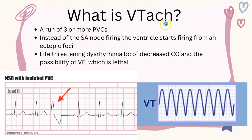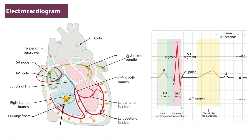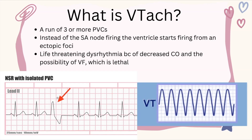So what is VTAC? If three or more PVCs — premature ventricular contractions — occur, then that is ventricular tachycardia. Instead of the sinoatrial node firing, the ventricles start firing from an ectopic foci or foci. It is a potentially life-threatening dysrhythmia because of decreased cardiac output and the possibility of turning into ventricular fibrillation, which is lethal.